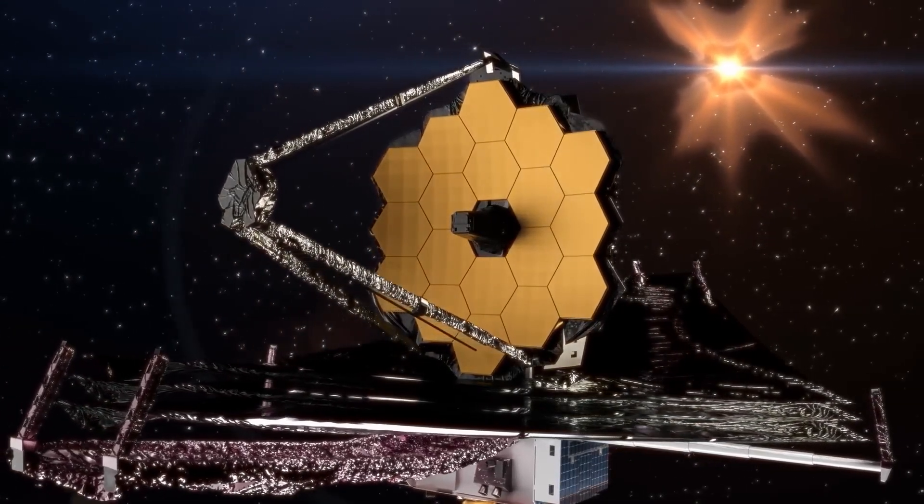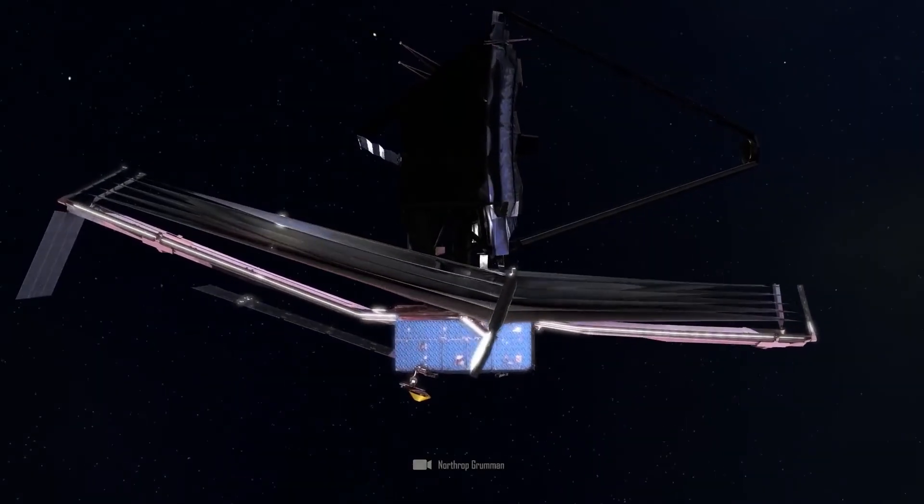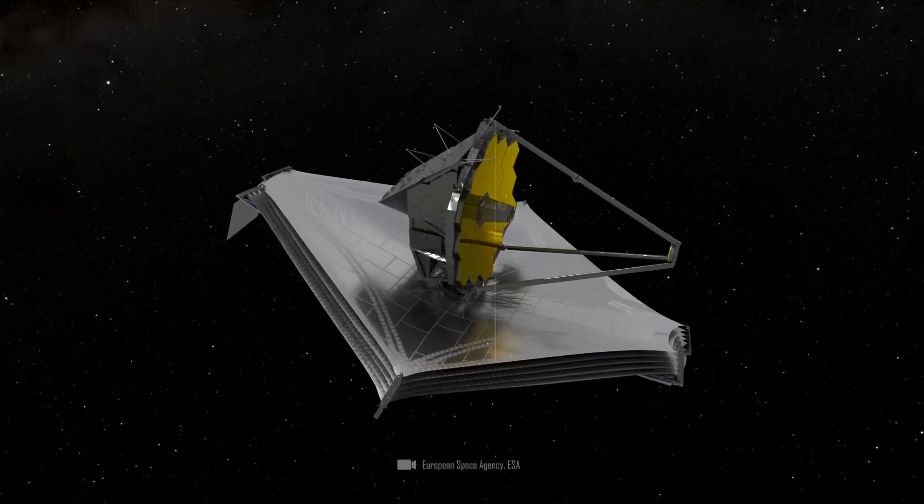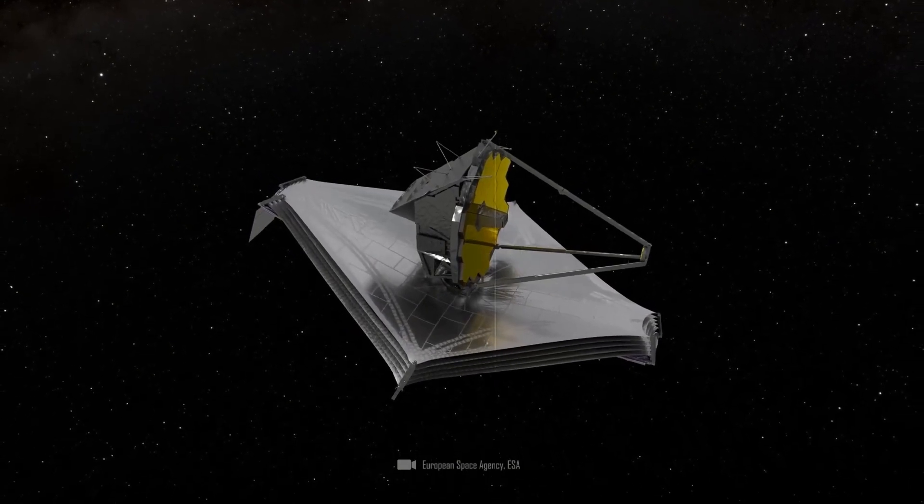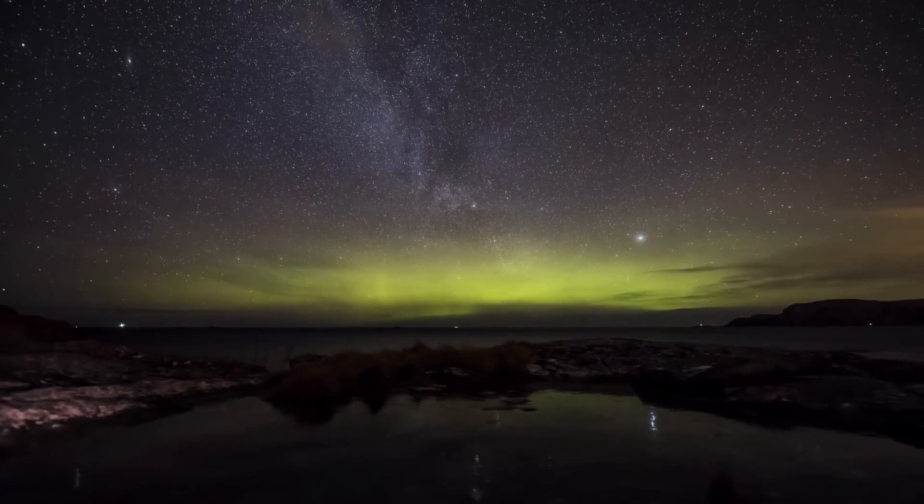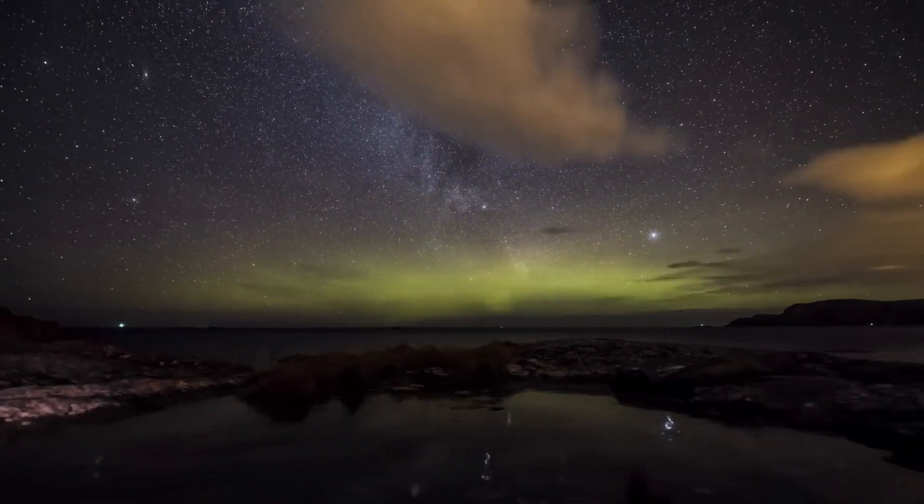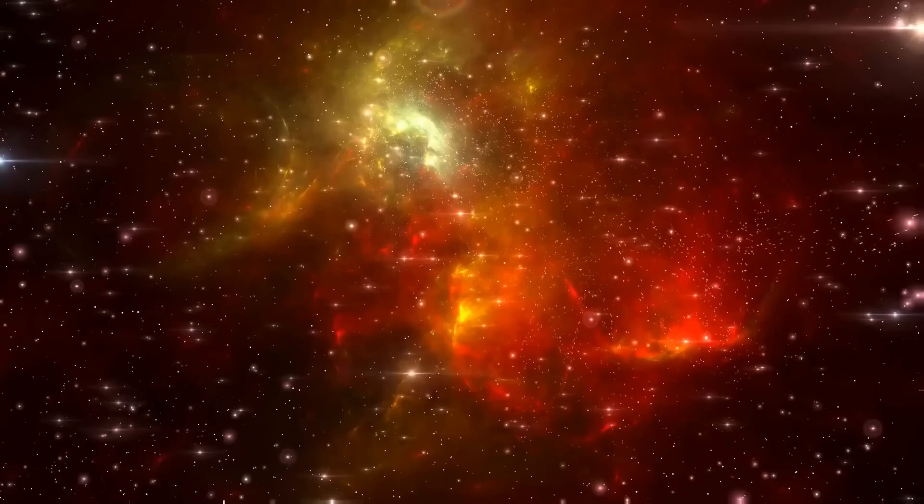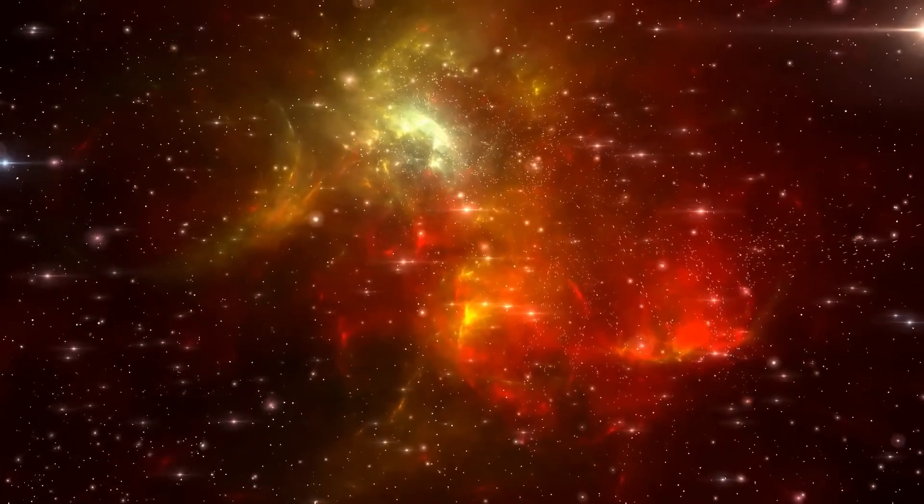The James Webb Space Telescope showed us shocking images of the early universe that turned our entire astrophysics on its head. And now the new telescope is cleaning up in our solar system. These days we are seeing images of planets that we have never seen before.